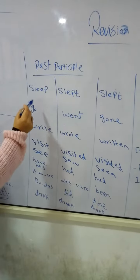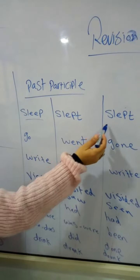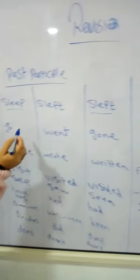In past participle tense, what is it? When I say sleep, sleep, past participle slept and also past participle slept.